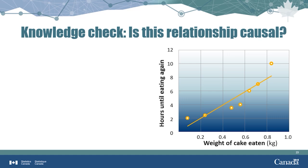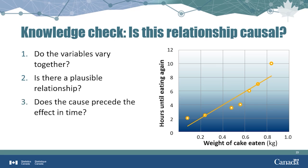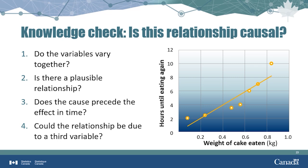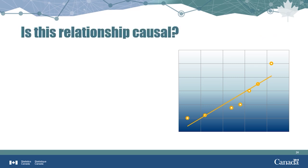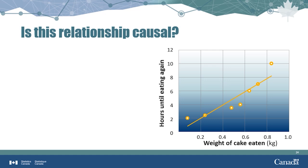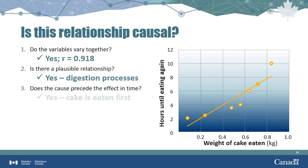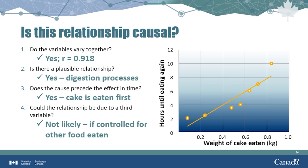Now, let's look at this scatterplot and try to determine whether or not there is a causal relationship between the amount of cake a person eats and how full they feel, measured by the amount of time that passes before the person eats again. We assume that all respondents are similar except for the amount of cake consumed. Think about the four criteria: Do the two variables vary together? Is the relationship plausible? Does the cause precede the effect in time? And is the relationship due to a third variable? After addressing the four criteria, we determined: the variables do vary together; yes, there is a plausible relationship; the cake is eaten first and causes the effect of fullness; and it is unlikely the feeling of fullness was caused by a third variable, since we controlled for all non-cake based foods.